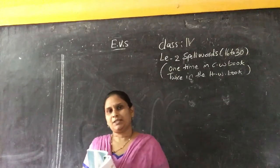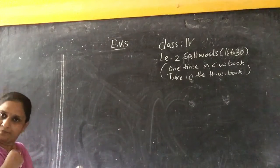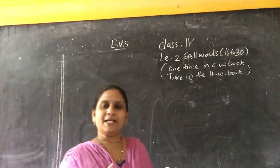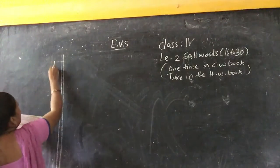So today, we'll cover spell words 16 to 30. Remember children, write one time in the classwork and each word two times in the homework book. Now write down number 16.